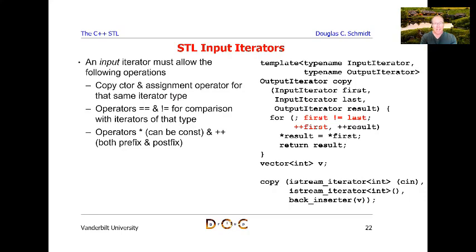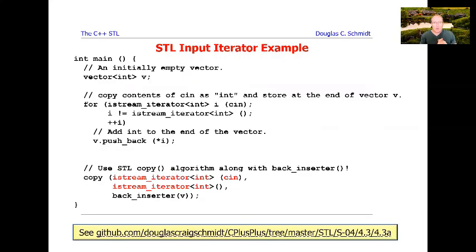The ++ operation can be either prefix or postfix, but I strongly recommend you always stick with prefix whenever possible because it's implemented more efficiently by the iterator implementation, due to the semantics of postfix operations. You'll get a chance to play around with that when you implement assignment number four and get to use iterators.